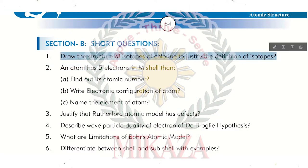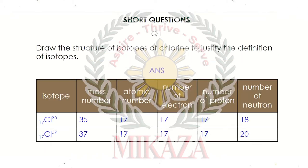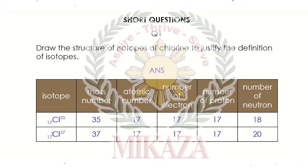Draw the structure of isotopes of Chlorine to justify the definition of isotopes. The definition of isotopes is that the mass number is different but the atomic number is the same. Because the neutrons are different, the mass number is different and atomic number is the same. We have to justify this by drawing the structure of Chlorine.